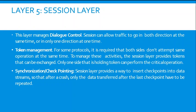The fifth layer is the Session layer. It manages dialogue control, allowing traffic to go in both directions at the same time (full-duplex) or only one direction at a time. For some protocols, it is required that both sides don't attempt the same operation simultaneously, otherwise we lose encryption. To manage this, the session layer provides tokens that can be exchanged between two devices — only the side holding the token can perform the critical operation. The session layer also provides synchronization checkpointing, inserting checkpoints into data streams so that after a crash only data after the last checkpoint needs to be retransmitted.